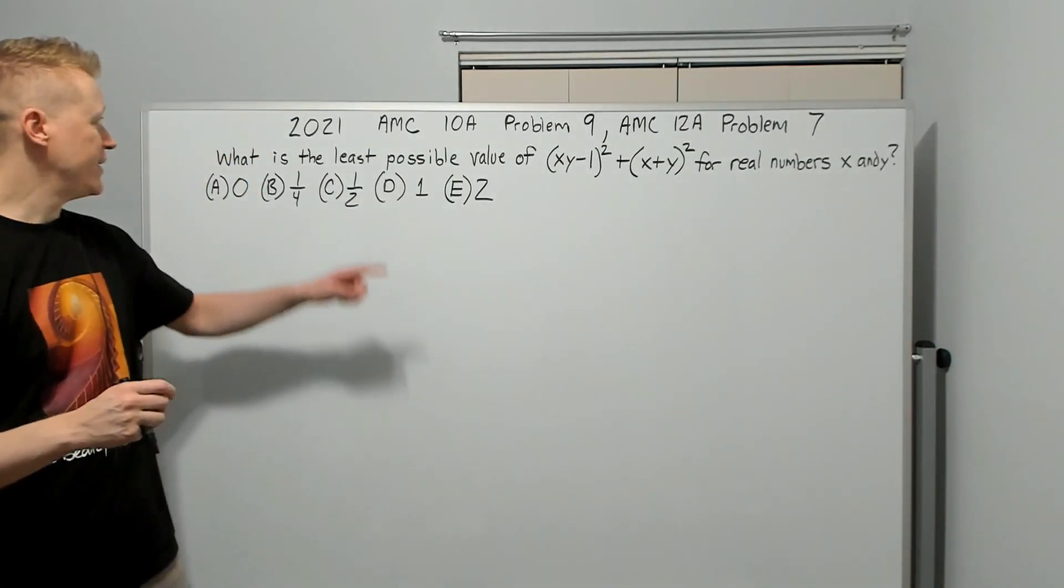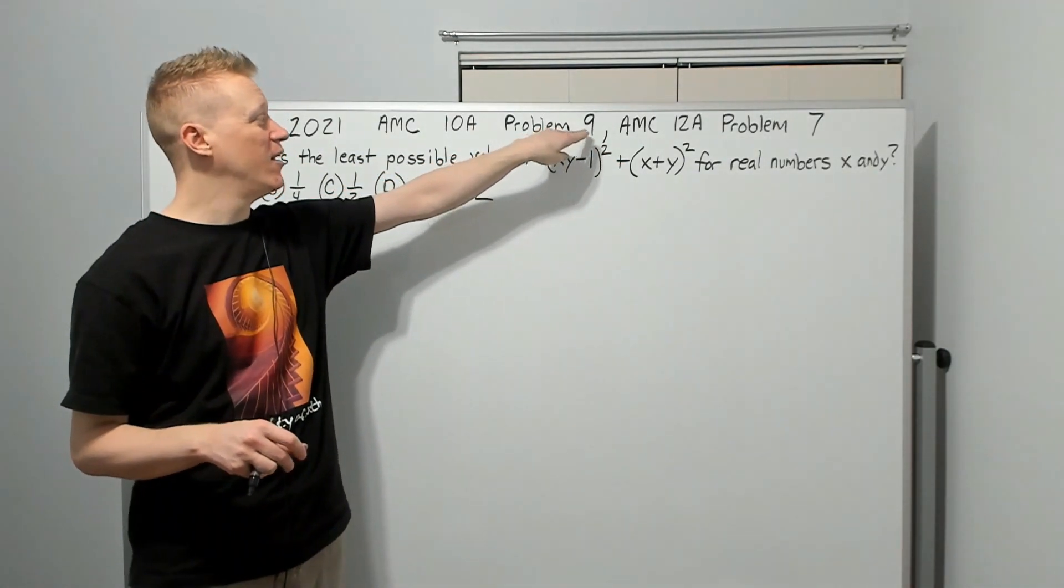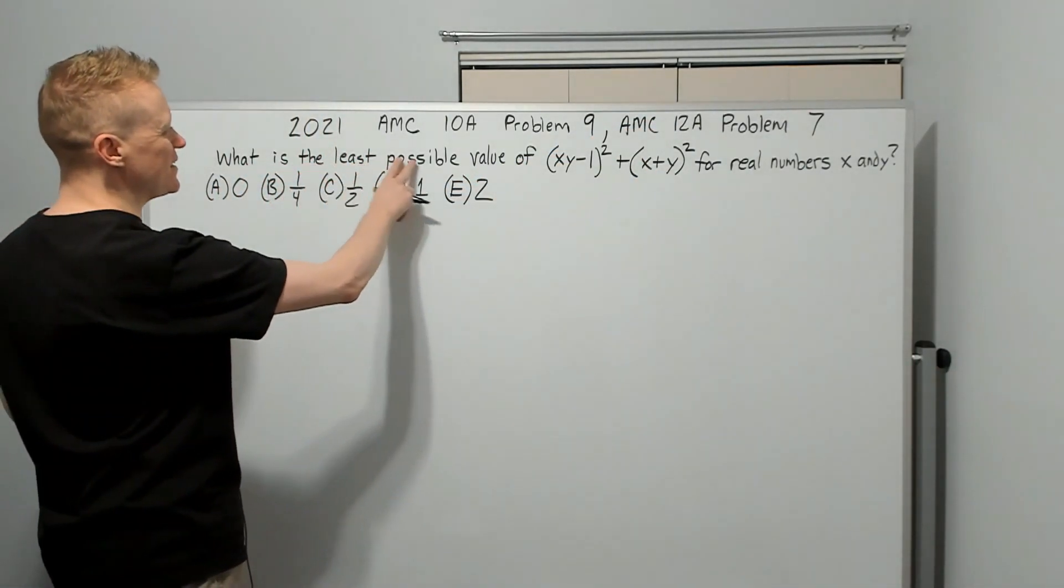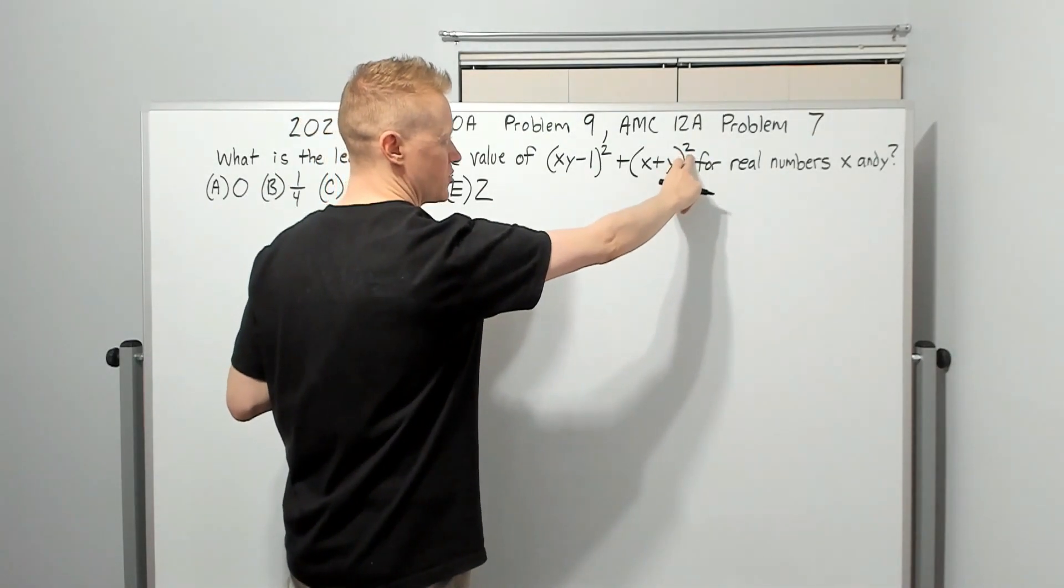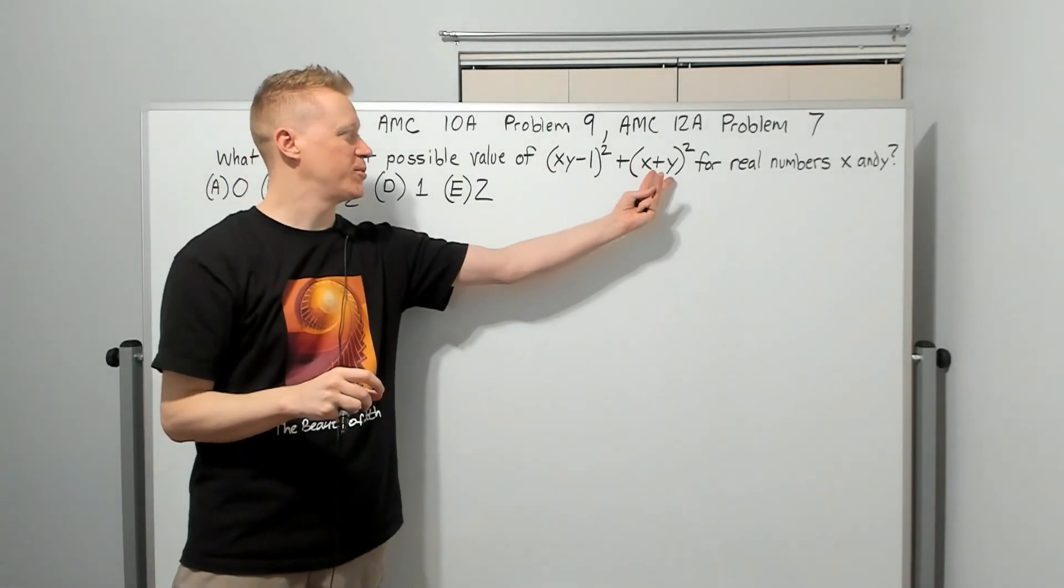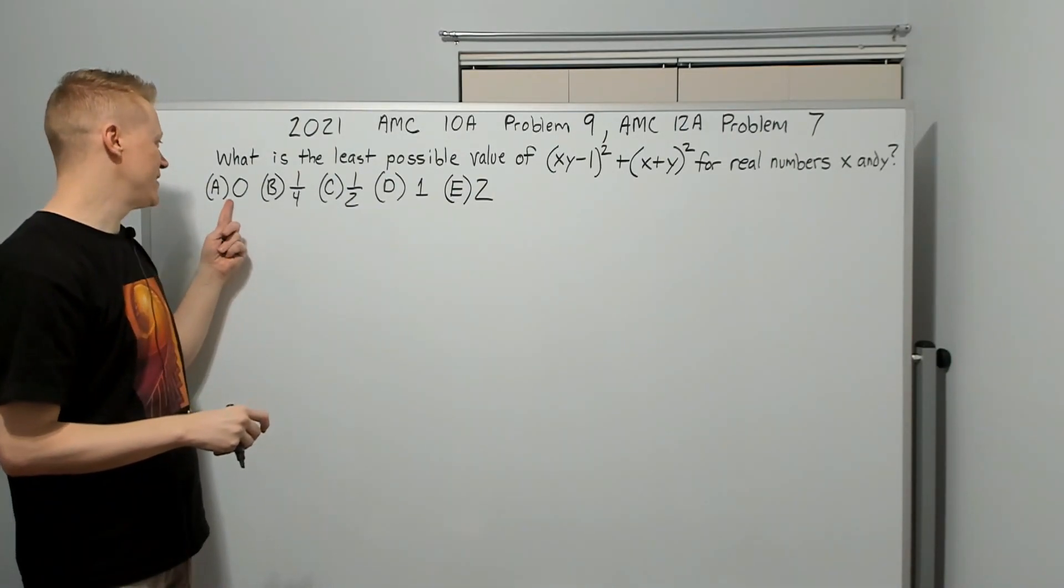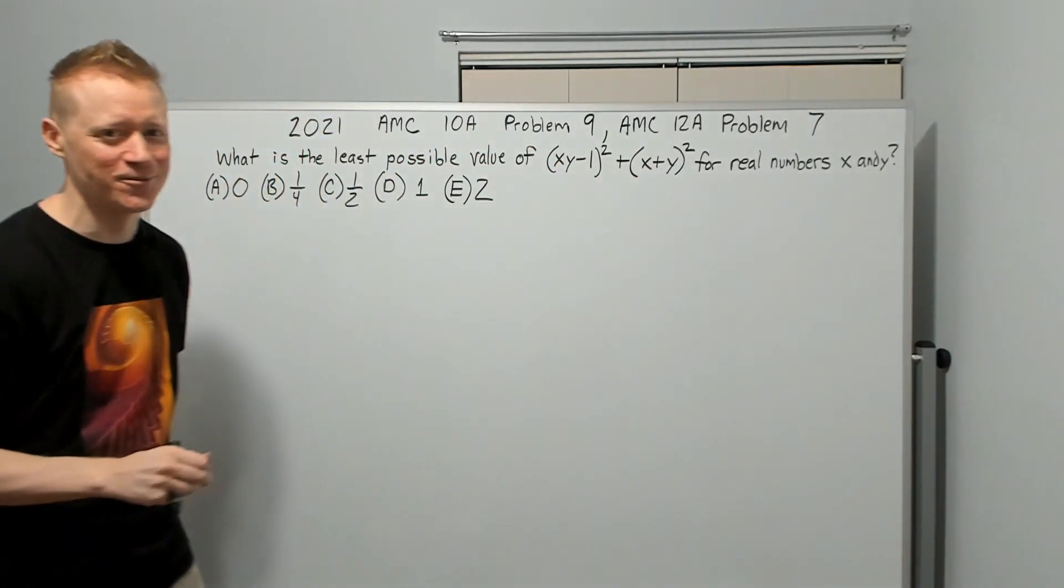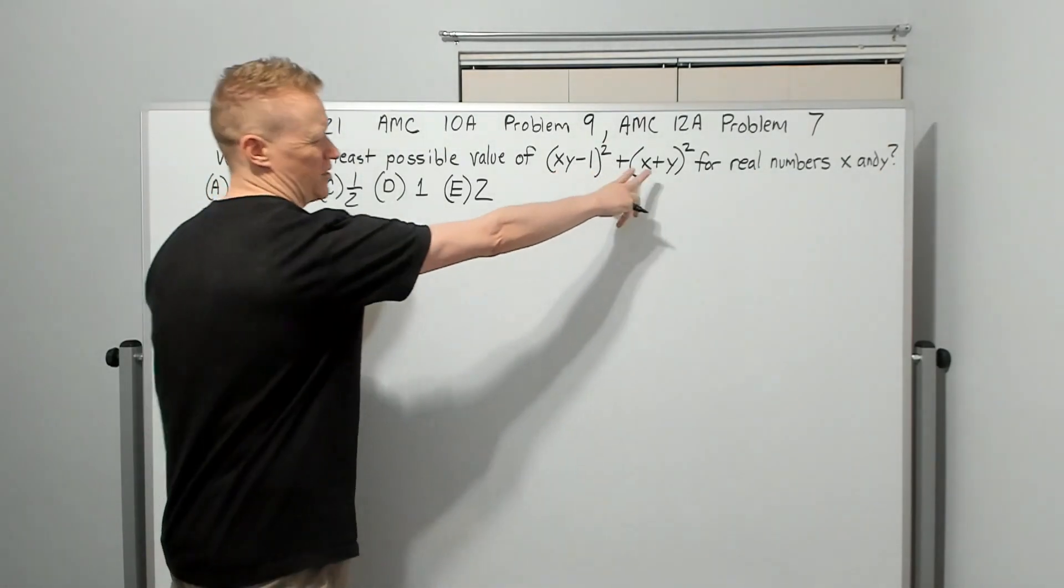And now the 2021 AMC 10A problem 9, also the AMC 12A problem 7. What is the least possible value of this? XY minus 1 squared plus X plus Y squared for real numbers X and Y. We got a perfect square and a perfect square. Smallest those can be is zero. It's got to be zero. Or is it? That looks like a nice trap answer. Do you really think on number nine, you're going to go, zero and zero. I'm so good? I hope you didn't do that.